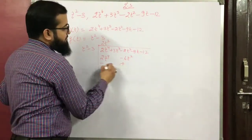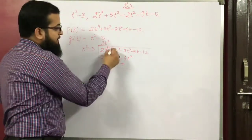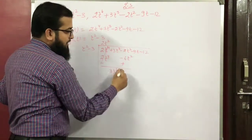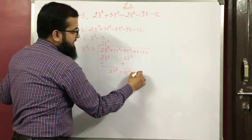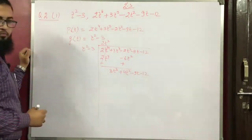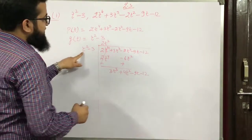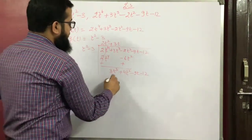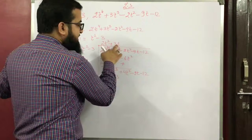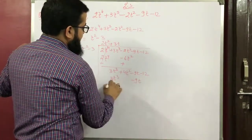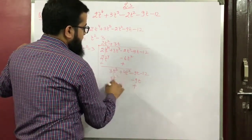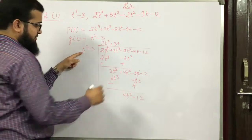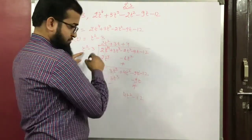After subtraction, those terms cancel and we get 3t³. That becomes plus 3t³. Then minus 3 times 3t gives minus 9t. Both cancel, leaving 4t² minus 12. Now multiply to get 4t².